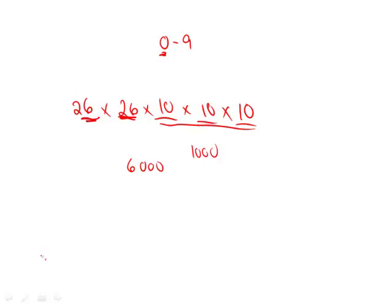So which of the answer choices ends in a six followed by three zeros? Only one is the answer, choice C. Good takeaway: 26 times 26 is equal to 676.